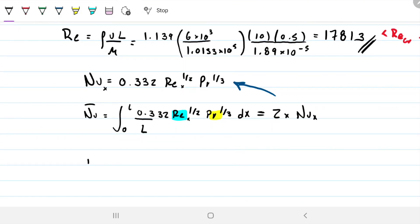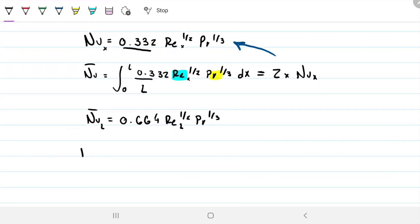We have everything we need. So my average Nusselt will be 0.664, my Reynolds is 17,813, my Prandtl is 0.706 to the 1/3, and this gave me 78.9 as Nusselt. Now I have Nusselt, I can calculate the average h for the whole L.